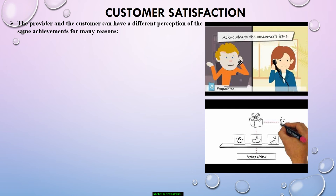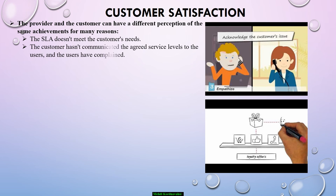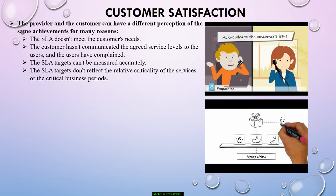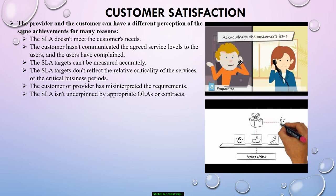The provider and customer can have a different perception of the same achievements for many reasons: the SLA doesn't meet the customer's needs; the customer hasn't communicated the agreed service levels to the users and the users have complained; the SLA targets can't be measured accurately; the SLA targets don't reflect the relative criticality of the services or the critical business periods; the customer or provider has misinterpreted the requirements; or the SLA isn't underpinned by appropriate OLAs or contracts. Reminder: OLAs — operational level agreements — are agreements between an IT service provider and another part of the same organization.